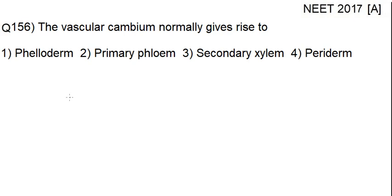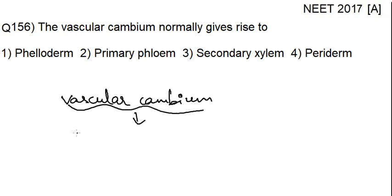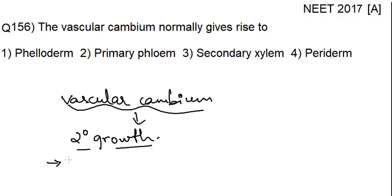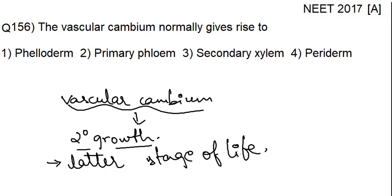Whenever there is a mention of vascular cambium, it always relates to secondary growth. Plants can show two types of growth: primary growth and secondary growth. By the name 'secondary,' it suggests that this growth happens in the later stage of the plant's life. This vascular cambium is responsible for the secondary growth.